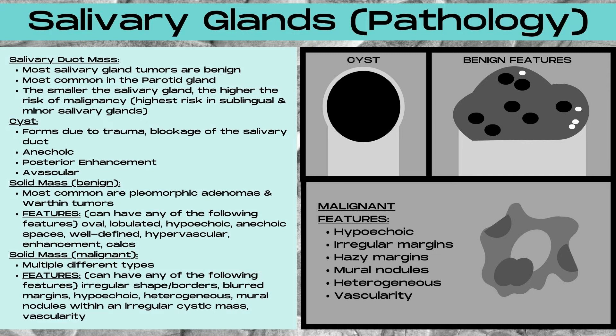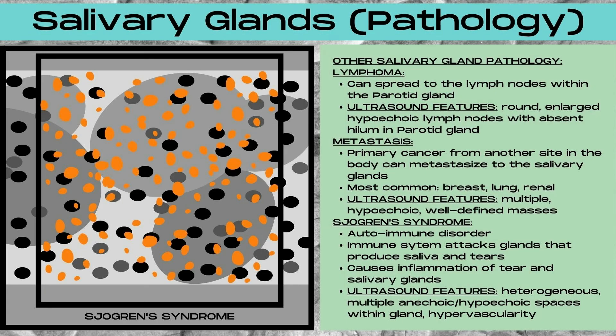The two most common benign solid masses in the salivary glands are pleomorphic adenomas and Warthin tumors. For malignant masses, there are multiple different types that can be found in the salivary glands. On ultrasound, malignant features include an irregular shape or border, blurred margins, hypoechoic, heterogeneous appearance, mural nodules along the wall of an irregular cystic mass, and internal vascularity. Other salivary gland pathologies include lymphoma, metastasis, and Sjögren's syndrome.